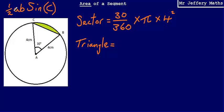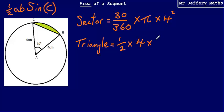In the formula half ab sine c, a and b refer to the lengths which are trapping the angle c, and c refers to the angle that is being trapped. Substituting in, I'm going to do half multiplied by 4 multiplied by 4 multiplied by sine 30.